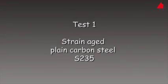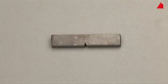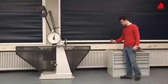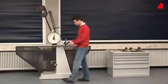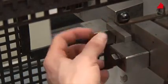First test: Strain Aged Plain Carbon Steel S-235. This is our test specimen. It has been machined to standardised size and shape with the characteristic V-shaped notch. The tester places the specimen on a support in the lower part of the machine and adjusts its position with a centring device.